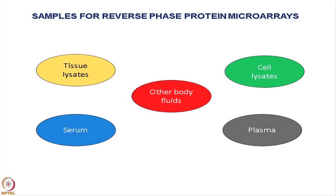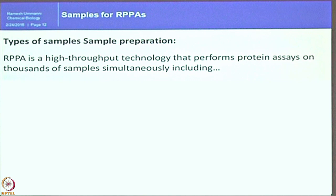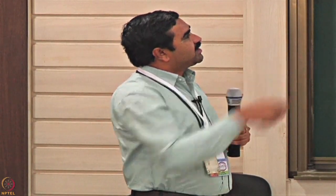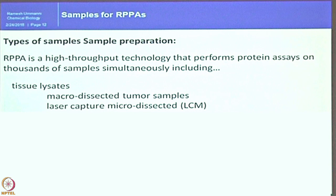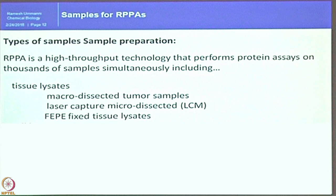First is samples — there is no limitation. Any sample that can be analyzed by western blot can also be analyzed by RPMA. You have to follow certain methods to prepare a clean sample and make it ready for the RPMA approach. It is a high-throughput technology that performs protein assays on thousands of samples simultaneously, including tissue lysates with micro-dissected tumor samples yielding at least microgram-level proteins. Laser capture microdissection (LCM) samples end up with very low quantities, so you cannot perform numerous western blots to validate many targets. PFA-fixed tissue lysates can also be used, and separate methods are available to extract protein from formalin-fixed tissues for RPMAs.